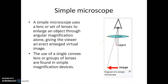A simple microscope uses a lens or set of lenses to enlarge an object through angular magnification alone, giving the viewer an erect, enlarged virtual image. It uses a single convex lens and provides a magnified view of the object as an erect and enlarged virtual image.